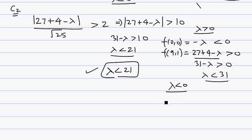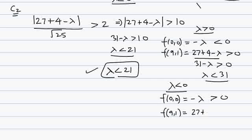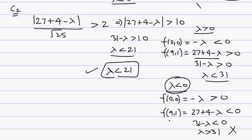For the second case, lambda less than zero means the sign of origin at (0,0) is minus lambda, which is greater than zero since lambda is negative. So the sign of (9,1) should be less than zero, meaning 31 minus lambda less than zero, so lambda greater than 31. But this is not possible since we assumed lambda less than zero.